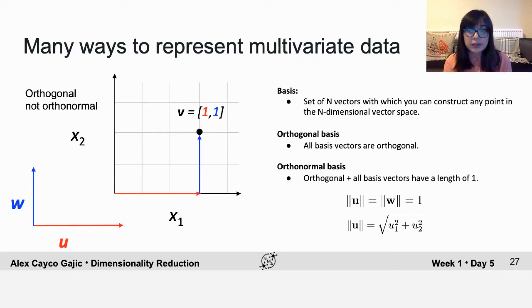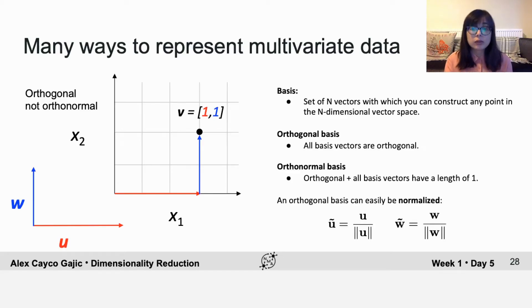And we can measure the length as the square root of the sum of the squared values of the entries. It's worth noting that if you already have an orthogonal basis, then you can very easily normalize it by dividing each basis vector by its magnitude.